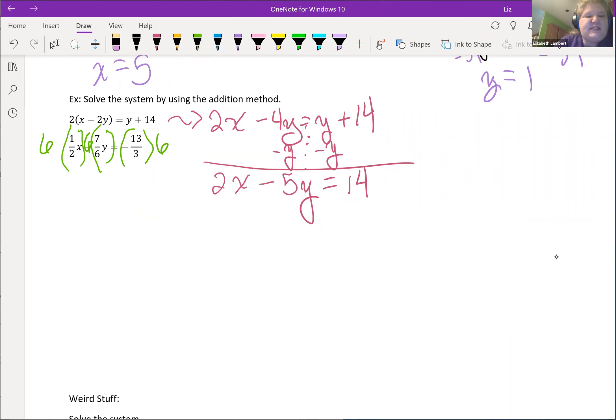Six times a half, half of six is going to be 3x and then that was a plus. Six times seven sixth will just be seven y's. Then three goes into six two times, negative 13 times two is negative 26. So there's our two equations. I'm going to write this one underneath the other. 3x's plus seven y's equals negative 26.